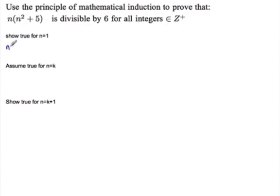So we'll show for n equals 1 at the start. So we get 1 times 1 squared plus 5, which is 6 times 1, which is 6. So that one works. First domino has fallen.